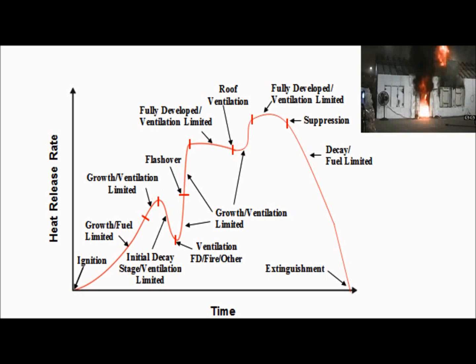We get our initial decay. An event takes place — that event is ventilation. In this case, we open the front door. Then we get a second growth stage, and at some point during that growth stage is flashover. Flashover is not a stage of fire growth — it's a momentary event that takes place during that growth stage, and then that growth stage continues. At some point, fire is completely coming out of the front door, and that flow path only exists at the front door. Flames come out the top, air goes in low — it's burning there because that's the only place it can find oxygen.